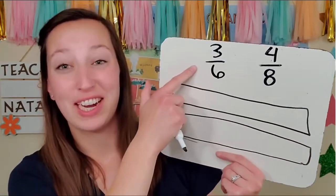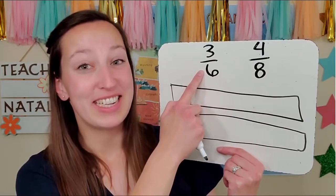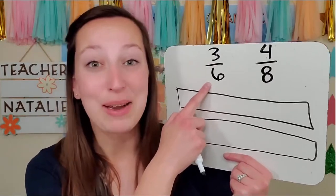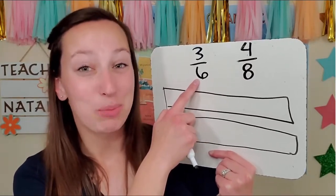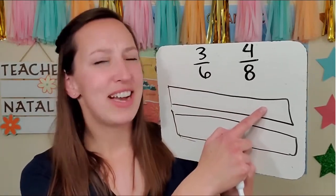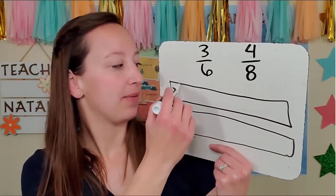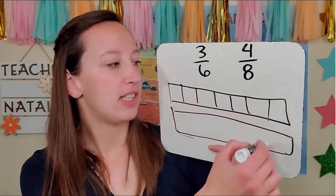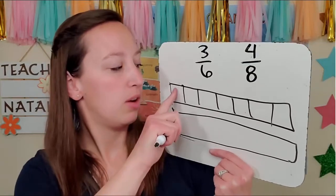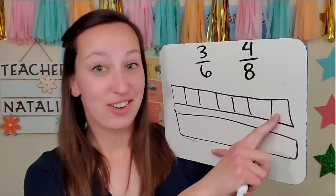My first fraction: three sixths. My numerator is three. My denominator is six. That tells me how many parts are in my whole — I have six parts. I need six parts. If I draw six lines, am I going to get six parts? Let's see: one, two, three, four, five, six. There are my six lines. Do I have six parts? One, two, three, four, five, six, seven. That is not going to work.